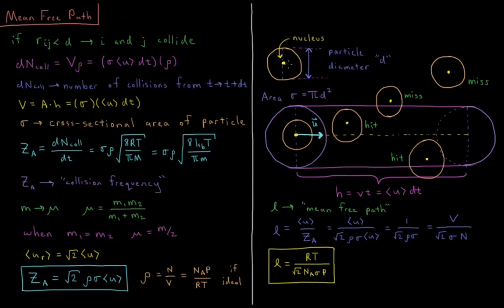Let's imagine we have some gas particle — a nucleus or collection of nuclei inside a circle. We assume an approximately spherical molecule with some effective diameter d, shown as an orange circle. If any particle comes within that orange circle — if the orange circle of another particle overlaps with the orange circle of this particle — that counts as a collision, and the particles will alter their trajectories.